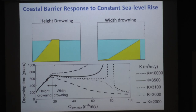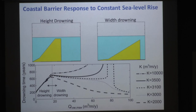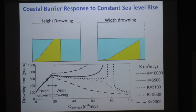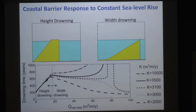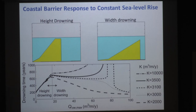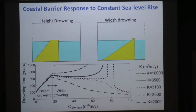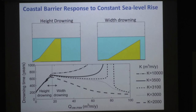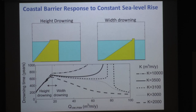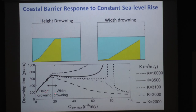We can also have barrier drowning. High drowning occurs when overwash fluxes are insufficient to maintain the subaerial portion of the barrier — the barrier migrates landward just a little and then remains as an offshore body. During width drowning, overwash fluxes increase and the barrier migrates landward trying to keep pace with sea level, but the surface doesn't respond fast enough to maintain geometry, and the barrier drowns. Overwash flux appears to be a critical control on these different modes of drowning.